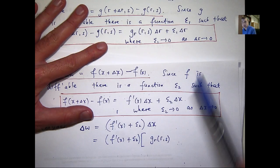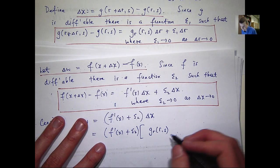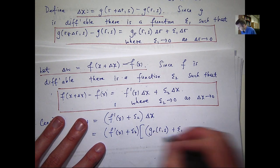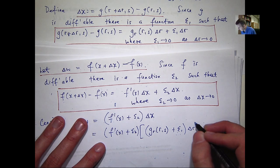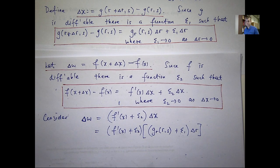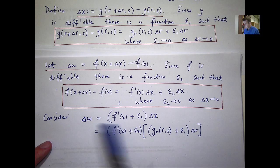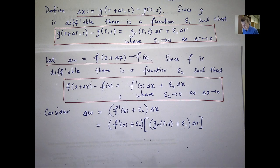Now, I've also got a common factor of delta r here. So, I'm going to factor that out as well. So, now, what I'm going to do is just divide both sides by delta r.